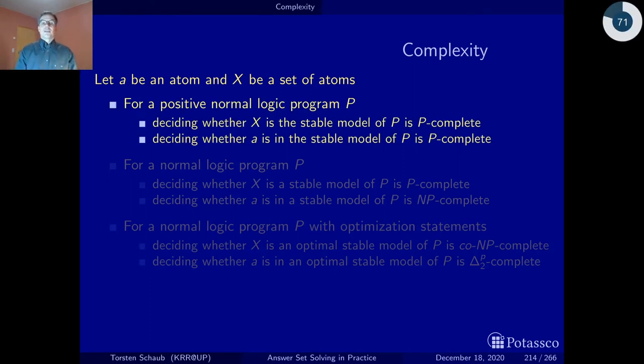First, if we take positive normal logic programs, we have this TP operator, and we can iterate this to compute the single stable model, the consequences of a positive logic program. Hence, deciding whether a set of atoms is a stable model is very easy. You just launch the TP operator, iterate it until you get a fixed point, and check whether this is the result. This can be done in polynomial time because you only have to go over the input and apply, in the worst case, all rules in the program.